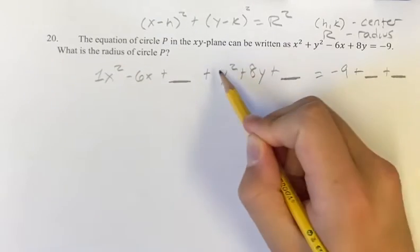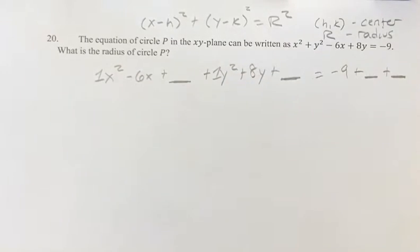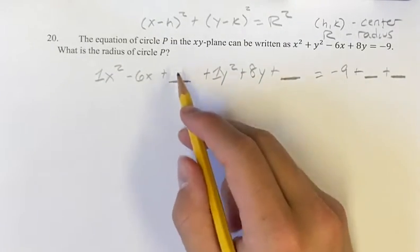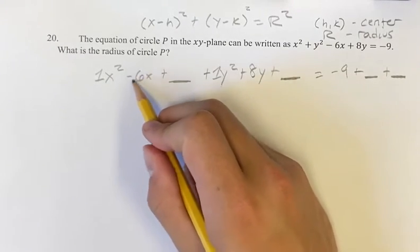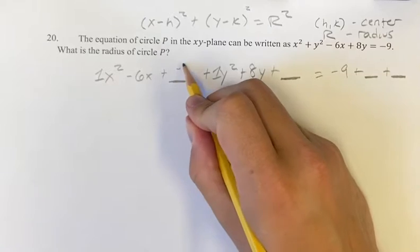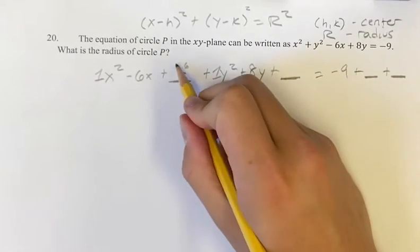and there's a one coefficient in front of the square term, it makes it really easy to find out what this is going to be. What we have to do is you have to divide this value by 2, which is negative 6 over 2, and square it.